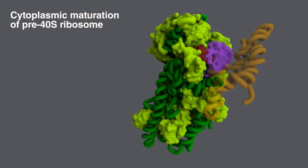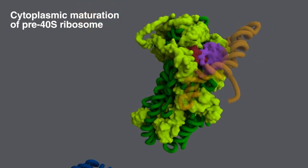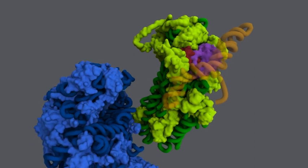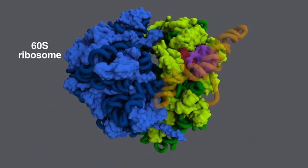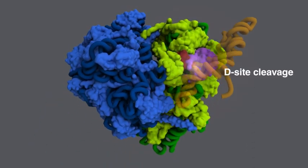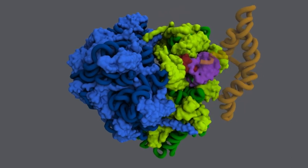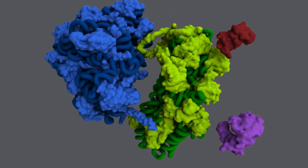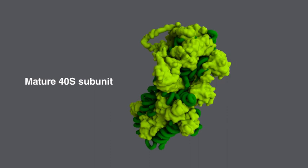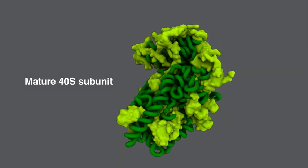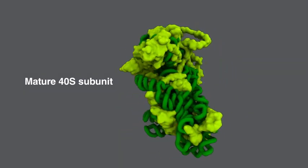This is triggered by joining of the mature 60S subunit to the pre-40S, which activates the bound NOB1 endonuclease to make this decisive cut, so that the mature 18S rRNA within the 40S subunit is formed. This mature 40S subunit is now ready to fulfill its role in translation.